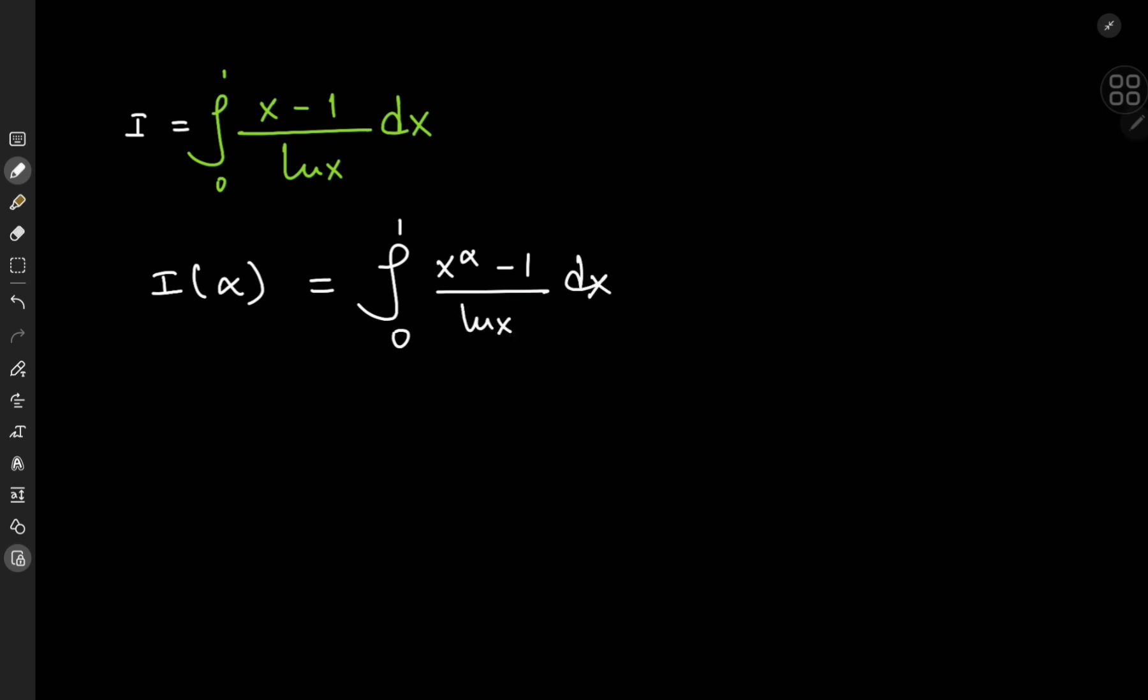And the reason for introducing the parameter alpha as an exponent in the x variable is that if we differentiate partially with respect to alpha, the term x to the alpha, we get x to the alpha times the logarithm of the constant base, which is x in this case. And this logarithmic term is pretty useful for dealing with the pesky logarithmic term in the denominator.